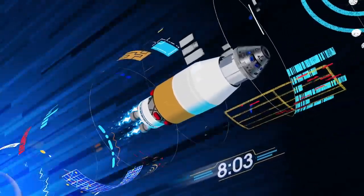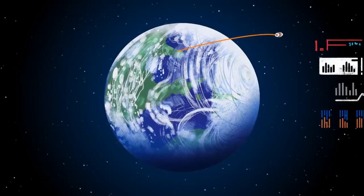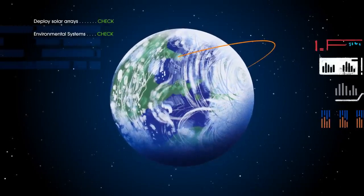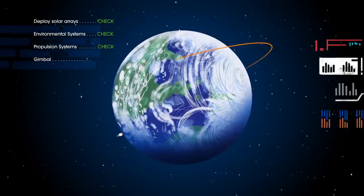The upper stage fires briefly, placing Orion into a parking orbit around the Earth. Here, the crew reconfigure the spacecraft and check systems to confirm everything is ready for deep space travel.